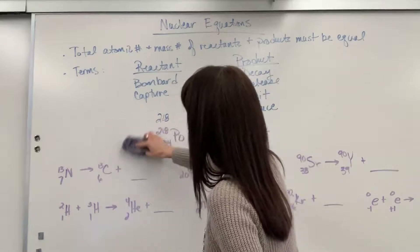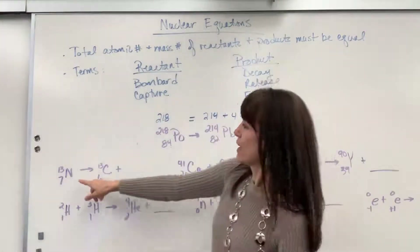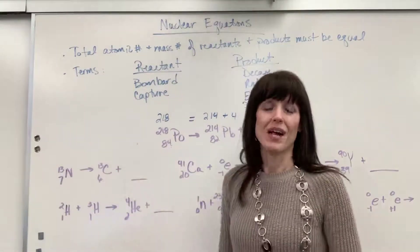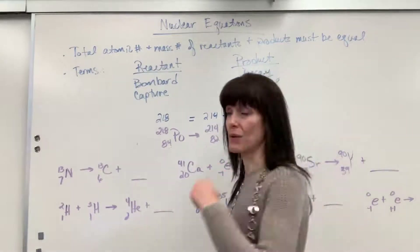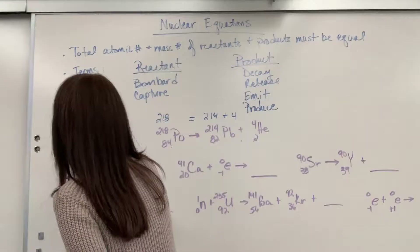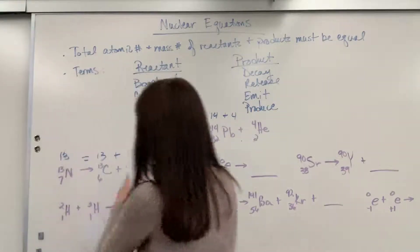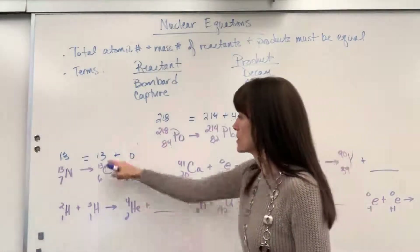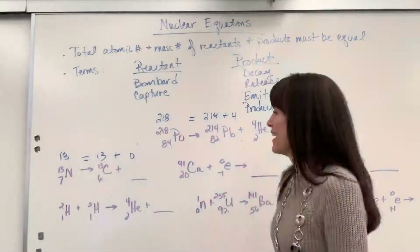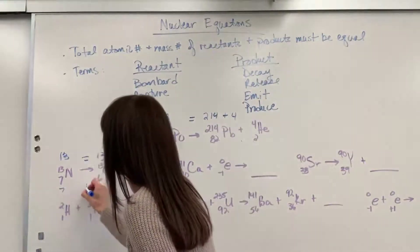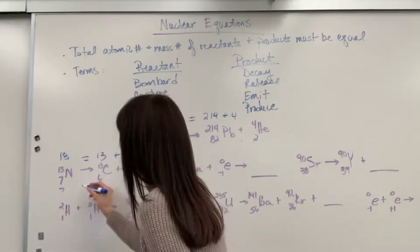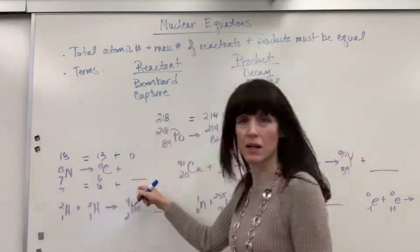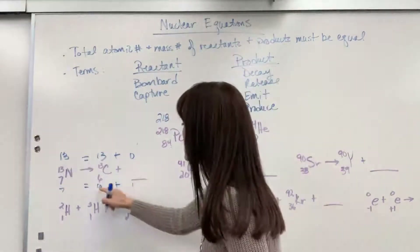Let's start on the far left-hand side. I have nitrogen-13 producing a carbon-13 and something else — some other particle — and we need to figure out what that is. We'll start with the mass number: 13 equals 13 plus zero. So I need a zero — 13 plus zero equals 13. Now the atomic number: 7 equals 6 plus what number? I need a one. Six plus one equals seven.